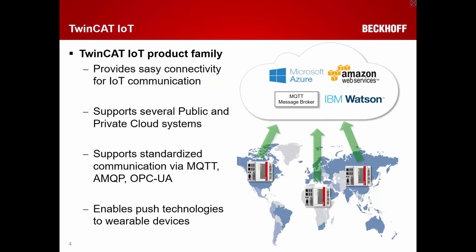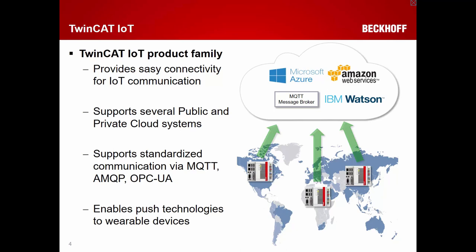For example, if you have an Apple Watch with the TwinCat IoT communicator app, you can receive push notification messages directly on your smartwatch from your machine. TwinCat IoT is a product family, and one of the first products now released is the TF6701 IoT Communication product, which is basically a PLC library you can reference in your PLC project to use MQTT publisher and subscriber technologies.